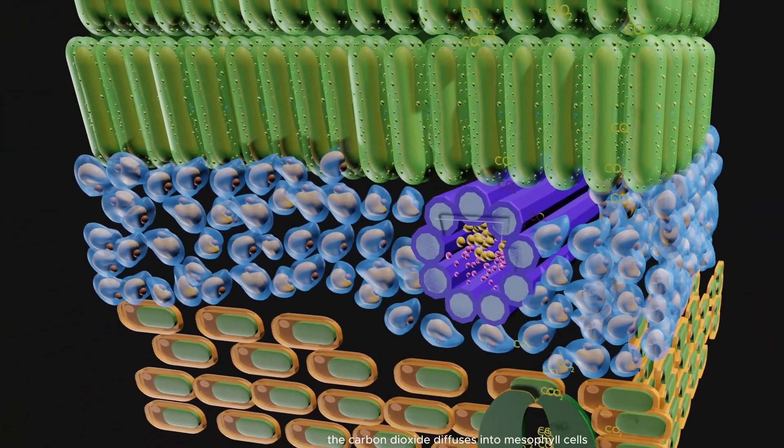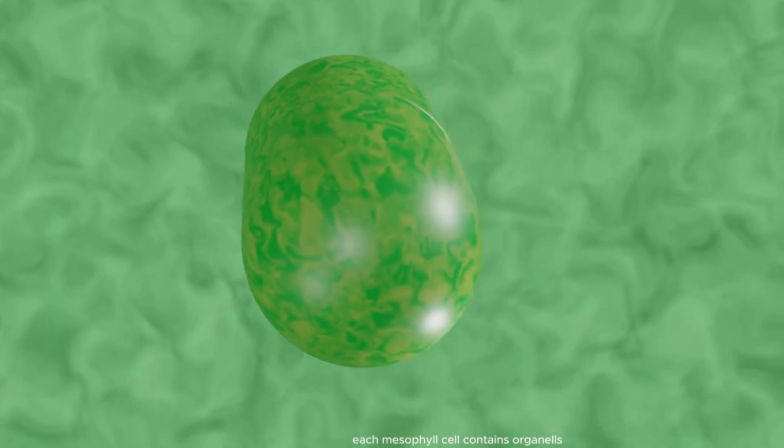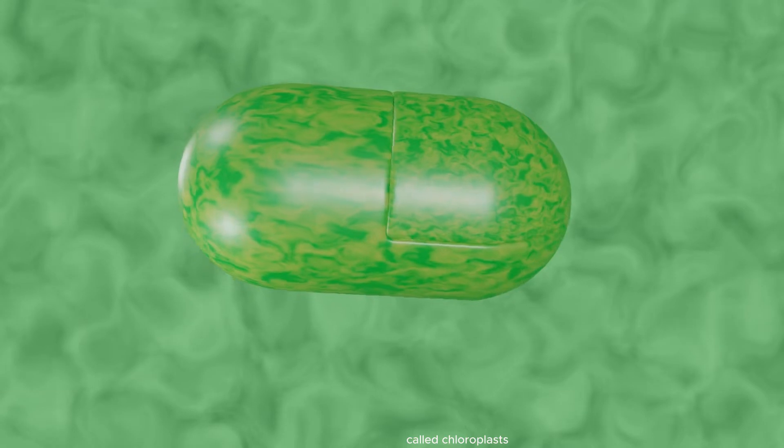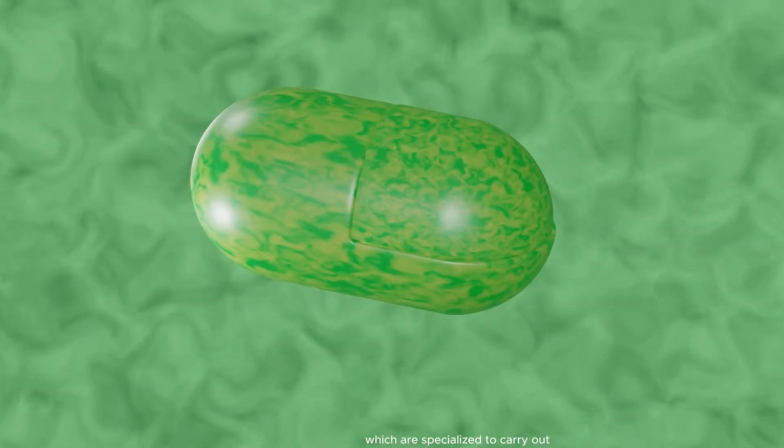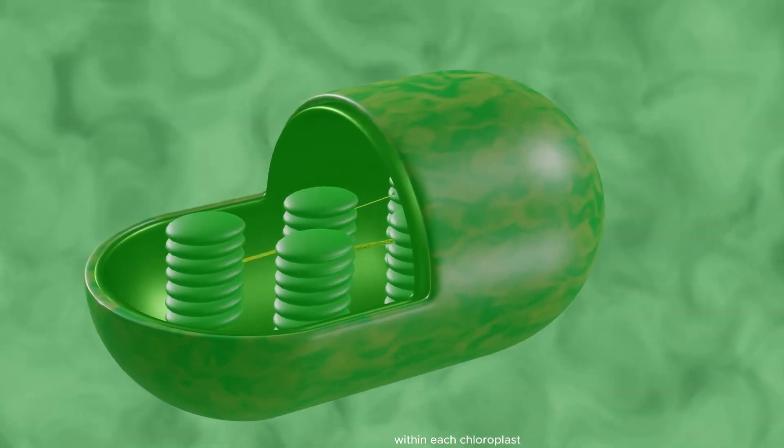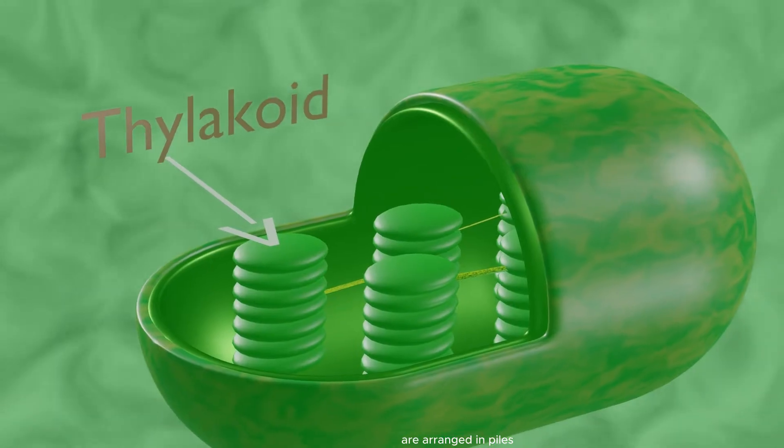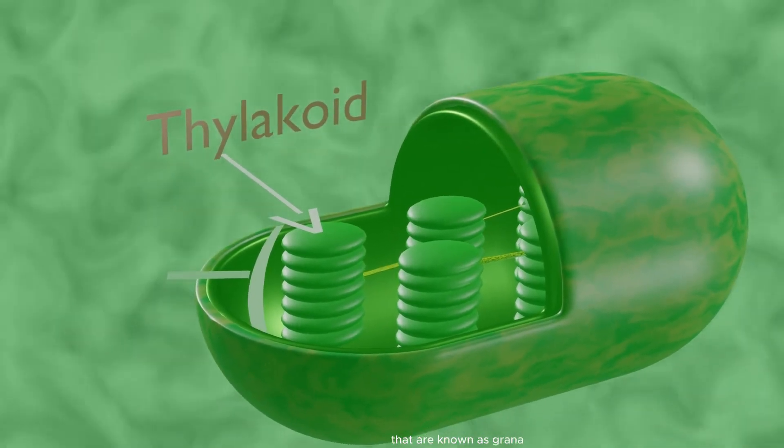From here, the carbon dioxide diffuses into mesophyll cells. Each mesophyll cell contains organelles called chloroplasts which are specialized to carry out the reactions of photosynthesis. Within each chloroplast, disc-like structures called thylakoids are arranged in piles like stacks of pancakes that are known as grana.